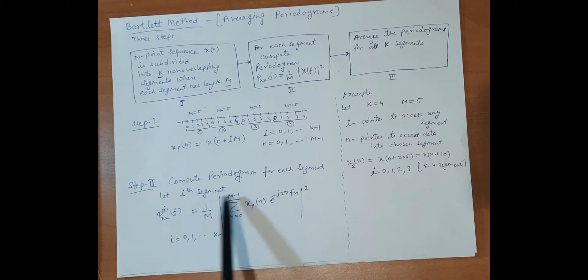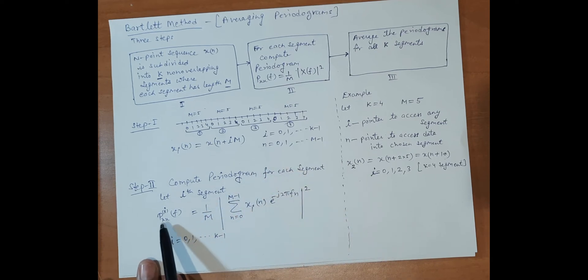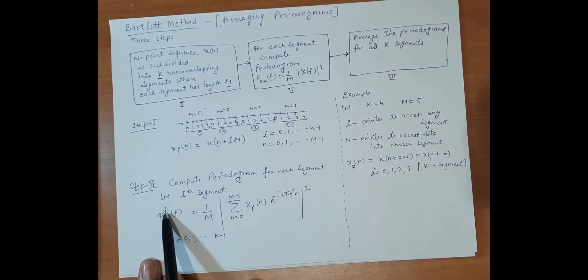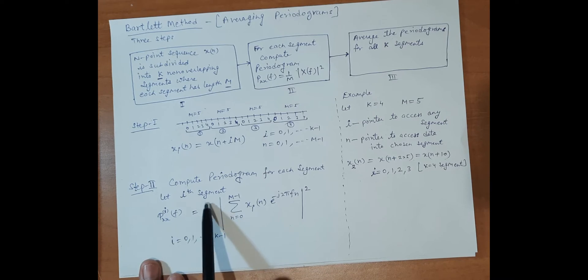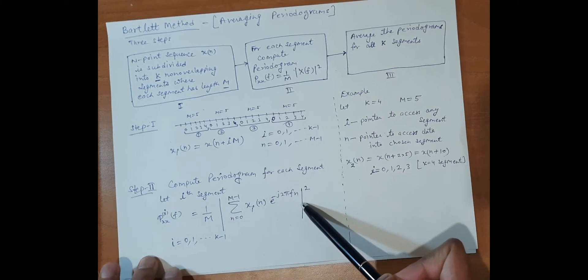Now computing the periodogram for each segment: for the ith segment, we have P_xx^i(f), and for the i segment we have m values, so 1 upon m. This formula comes from the standard expression.